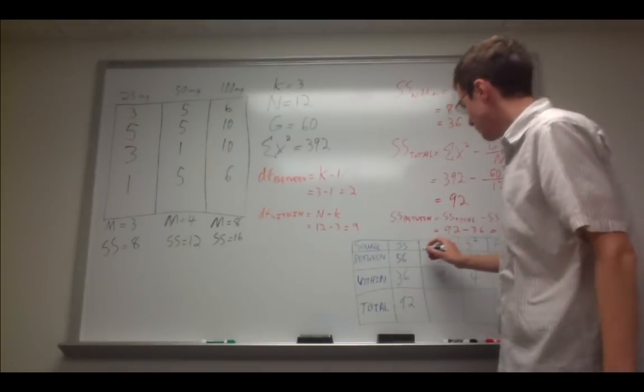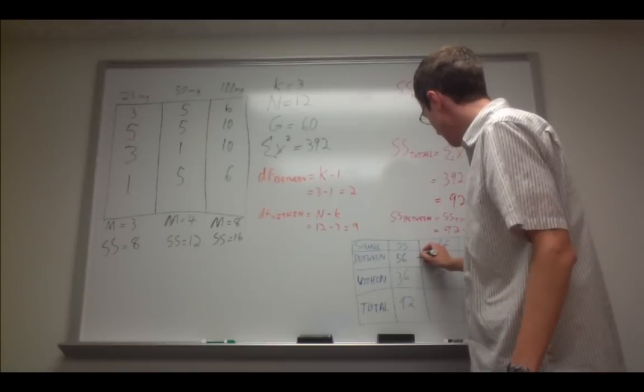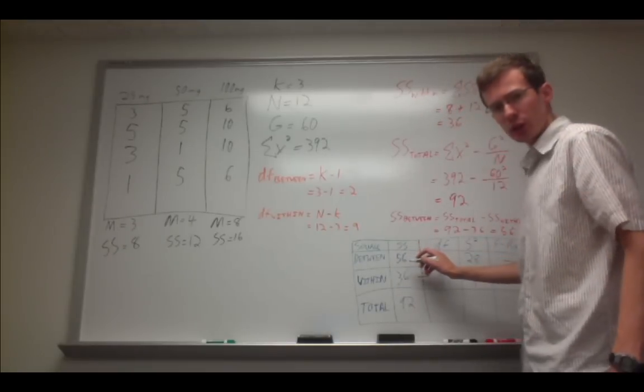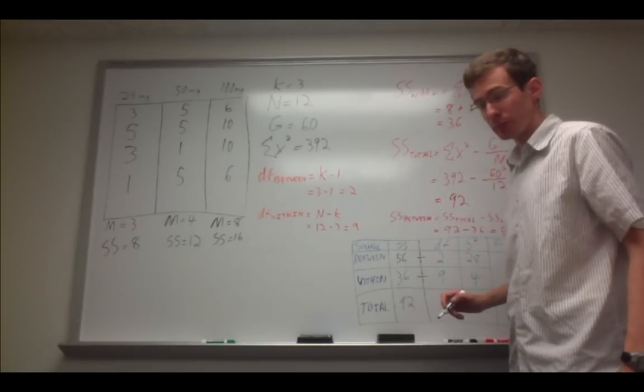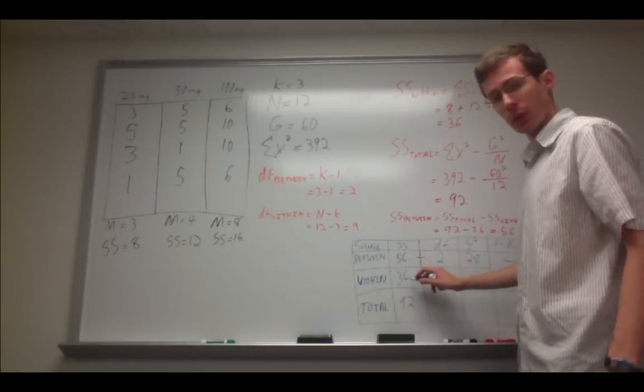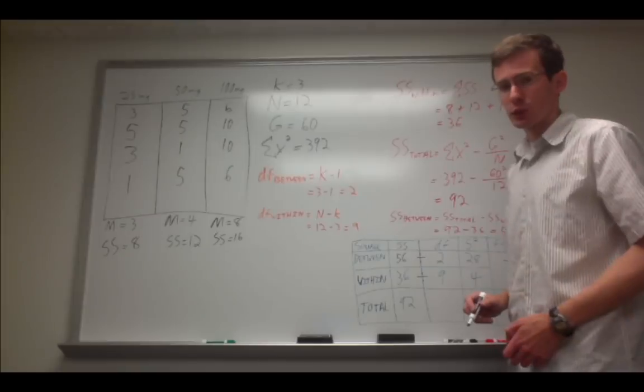Now, we simply divide. You can see this little division symbol right here. We divide the sums of squares by their respective degrees of freedom. So, for example, 56 divided by 2 is 28. 36 divided by 9 is 4.